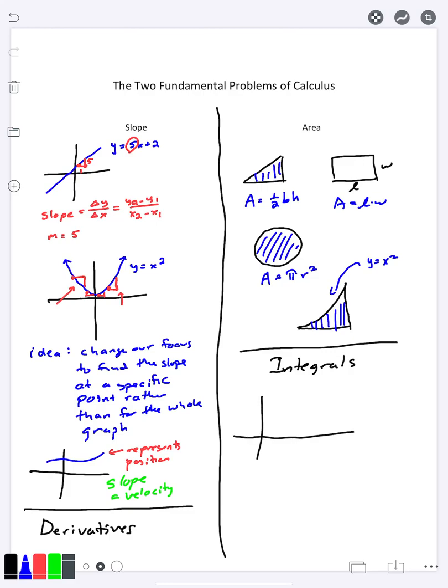What the integrals are going to allow us to do is they're going to allow us to take some other random function here, and we're going to take some piece of it, and we're going to be able to find that area. We can find the area no matter how crazy the shape is on top. We can still do something like this to get the answer. So the process we're going to learn in calculus will allow us to find this answer even if it's not one of your nice normal shapes from geometry class.